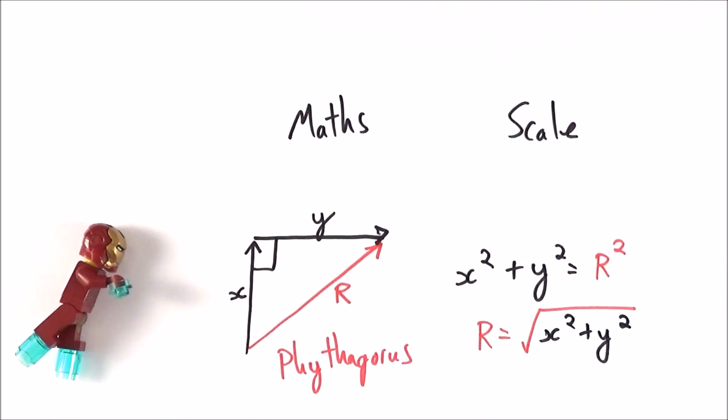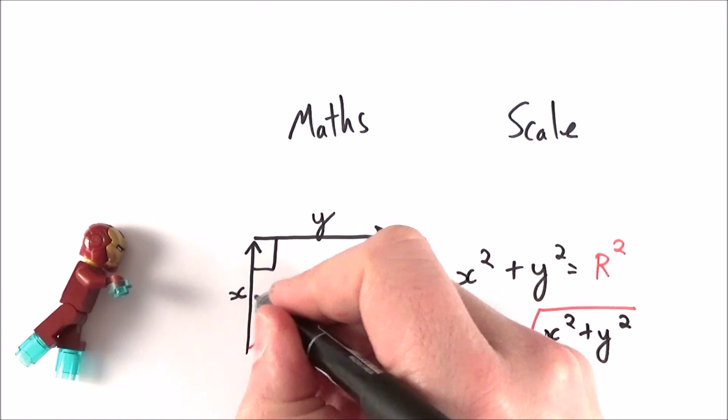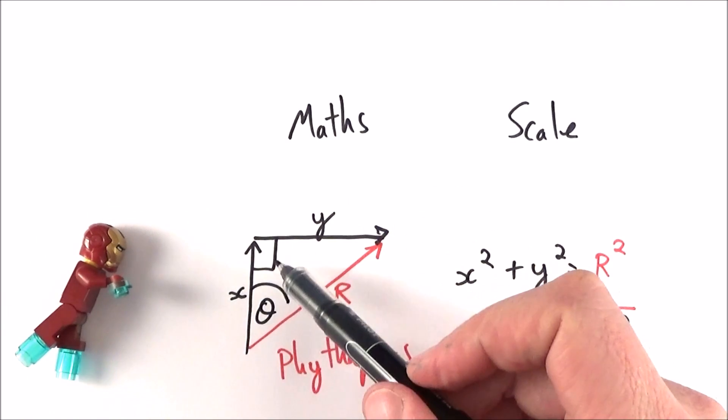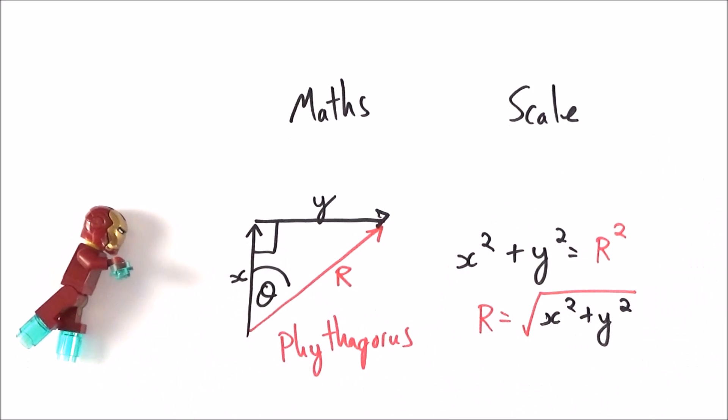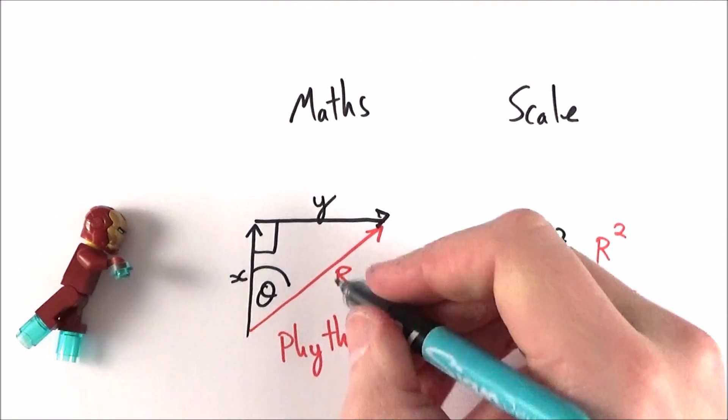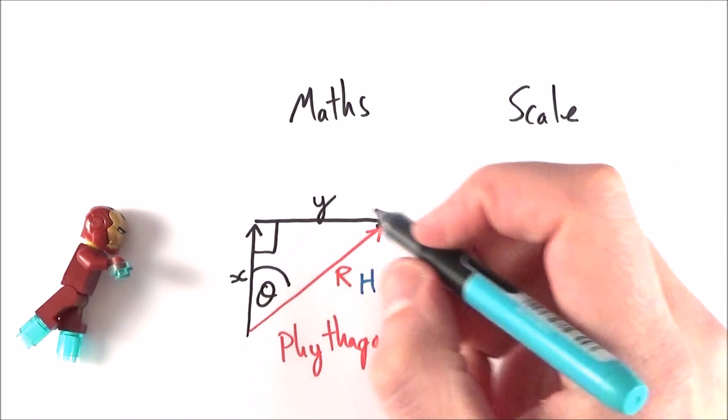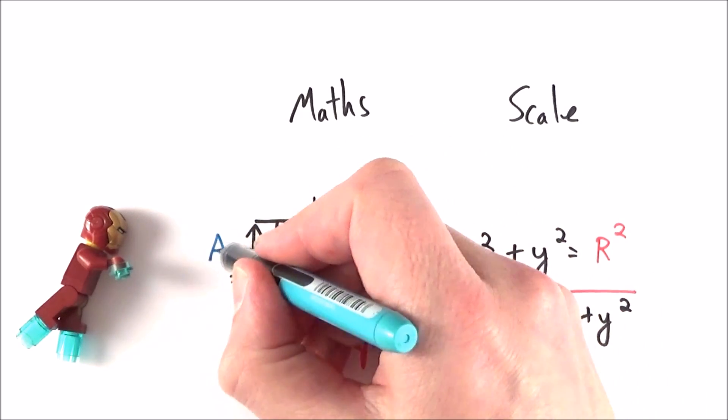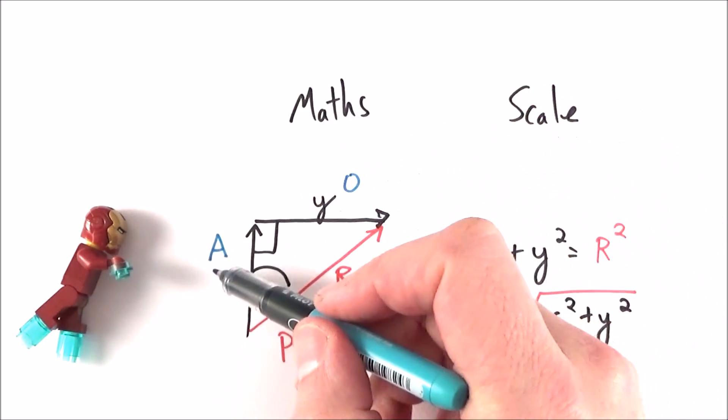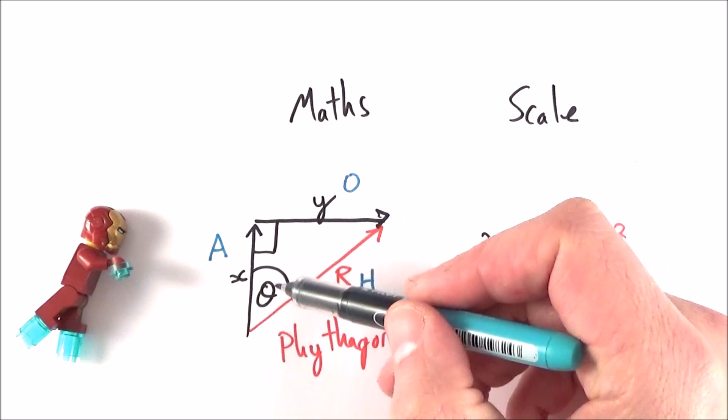However, a vector also must have some kind of direction theta, and we can do this using SOHCAHTOA. So we can find maybe the hypotenuse, we maybe know the side of the adjacent or the opposite, and if we know the adjacent and the opposite or the hypotenuse, we can work out theta.